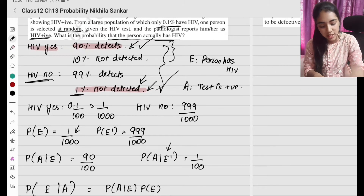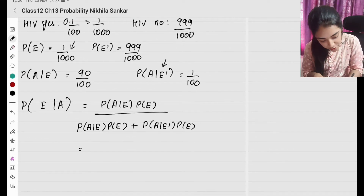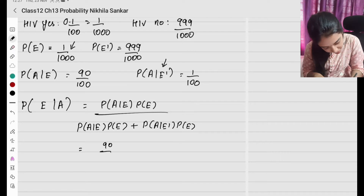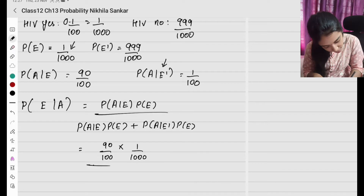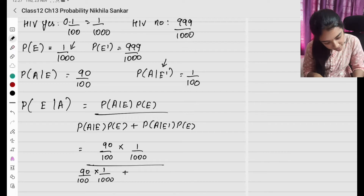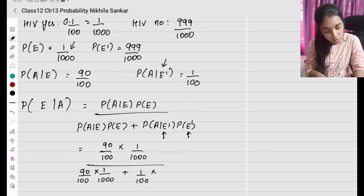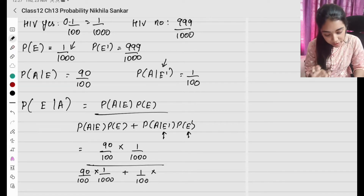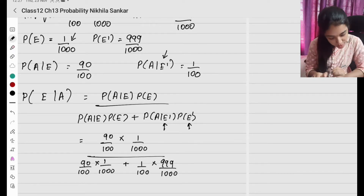Interpreting the information correctly and substituting the values: numerator is 90 by 100 times 1 by 1000. Denominator is 90 by 100 times 1 by 1000, plus 1 by 100 times 999 by 1000. Probability of E-dash is 999 divided by 1000.